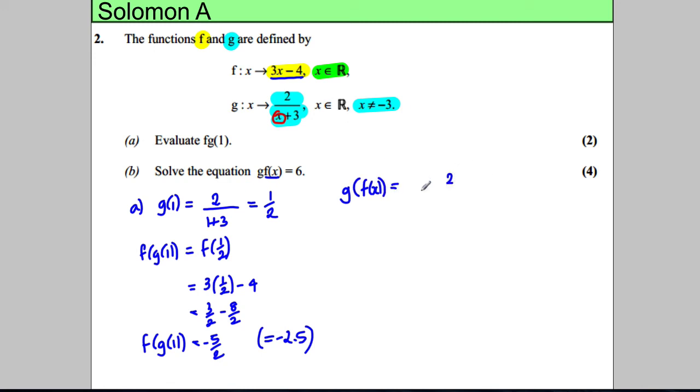So we're going to have 2 over x add 3. But instead of x, we're not going to have x there. We're going to have 3x take away 4. So 3x take away 4 like that. And so that's 2 divided by, we've got negative 4 add 3, which is negative 1. So 3x subtract 1. And that's our g of f of x. And we're making this equal 6.